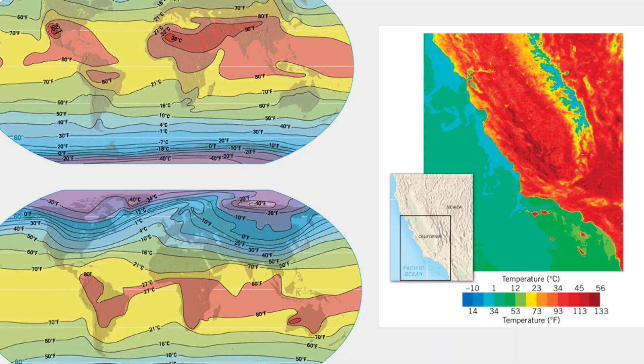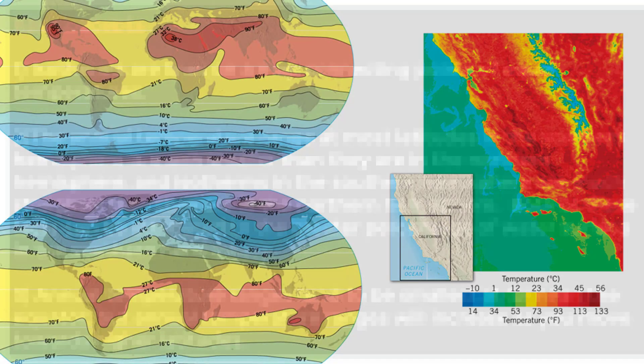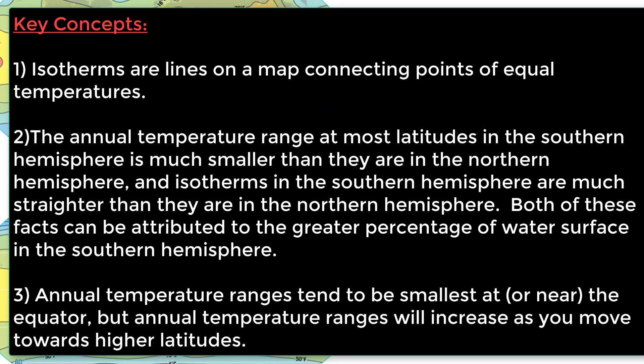The greatest temperature ranges will occur over continental locations, because of land's ability to heat up rapidly and cool down rapidly. Due to the very high heat capacity of water, the oceans are very good at maintaining their temperatures. That concludes this video podcast. In our final vodcast of this chapter, we will turn our attention to climate change.